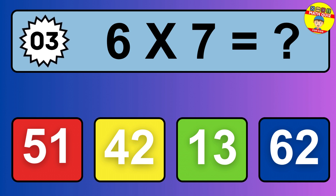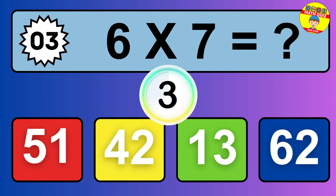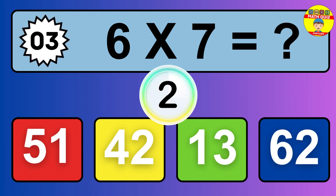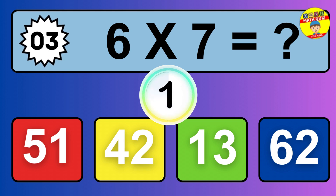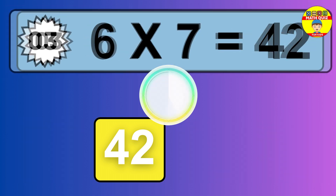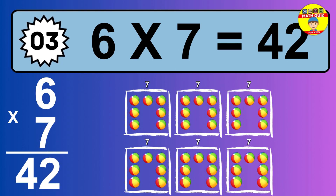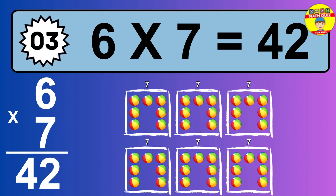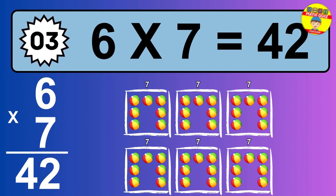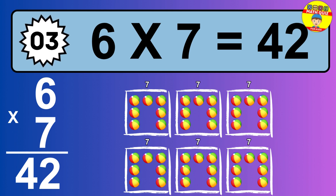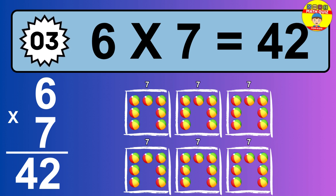Question 3. 6 times 7 equals what? The answer is 6 times 7 is 42. To calculate, we have 6 groups with 7 balls each one. So, how many balls do we have? 42 balls.